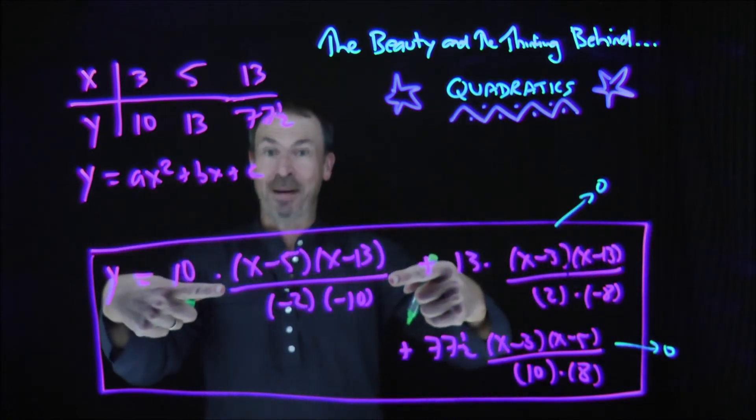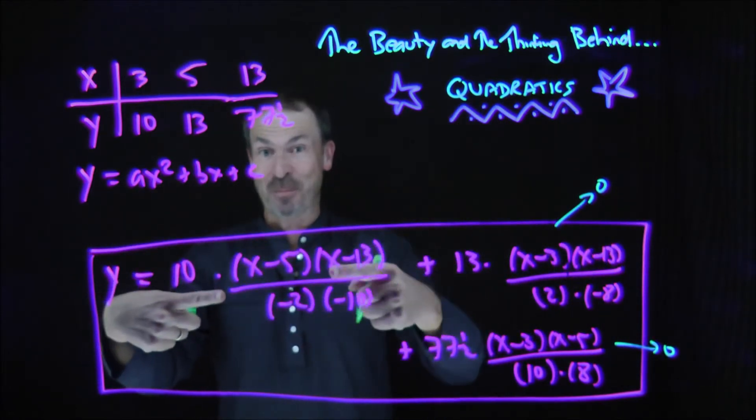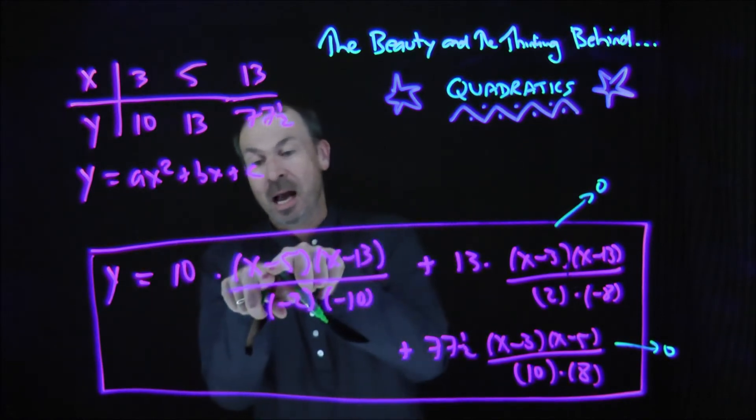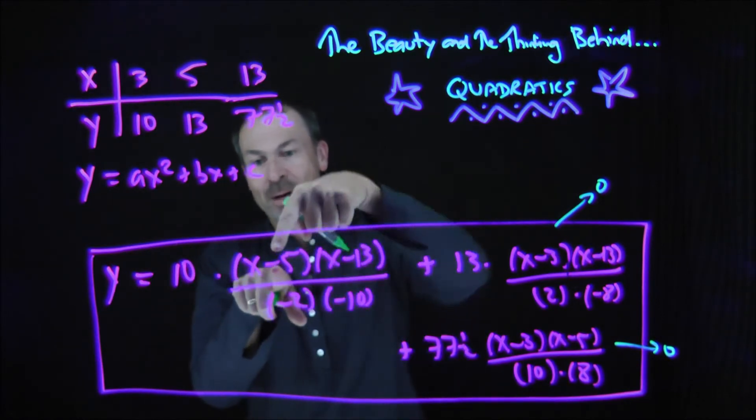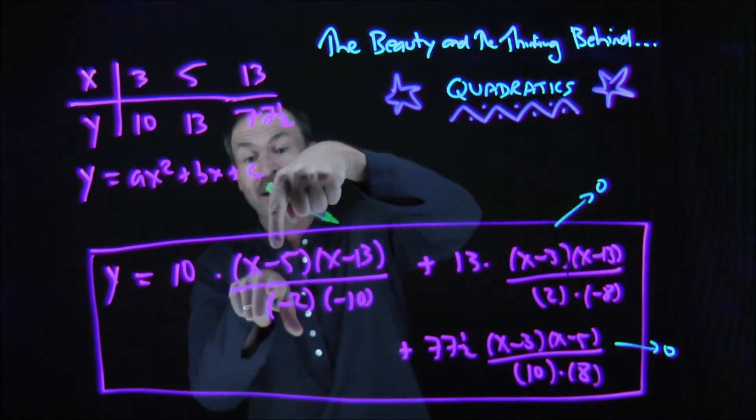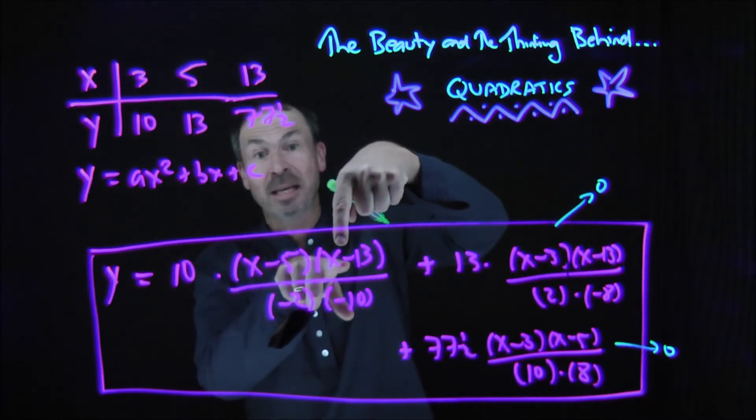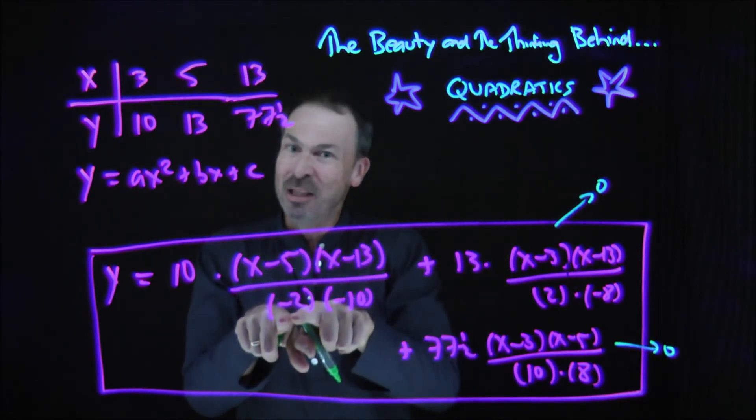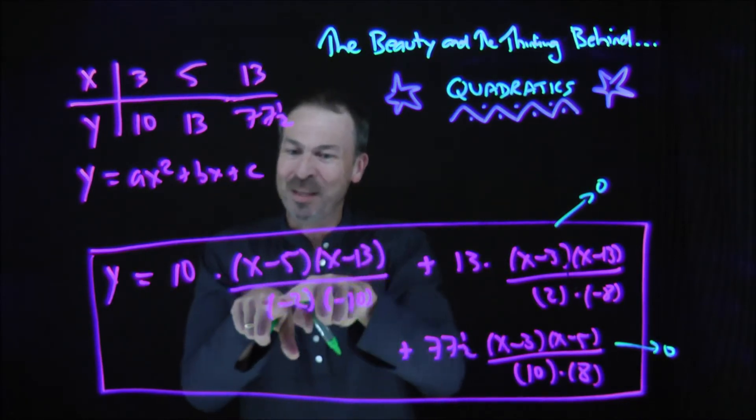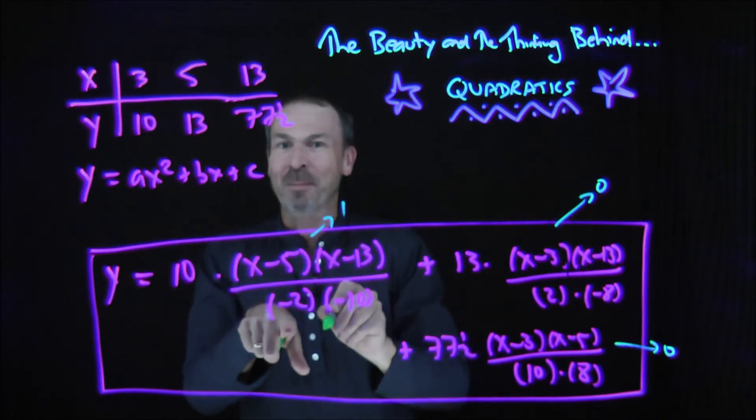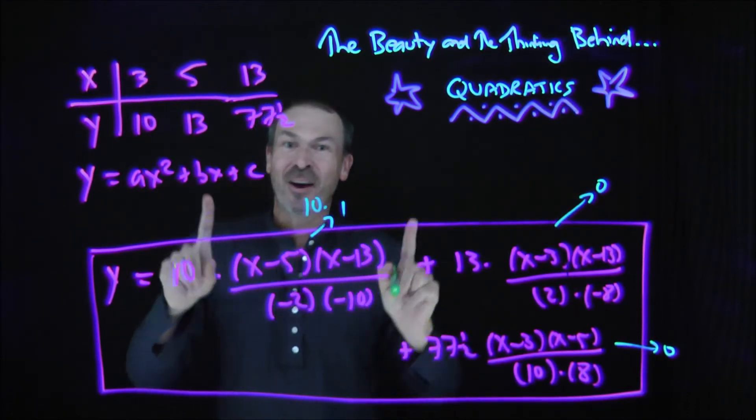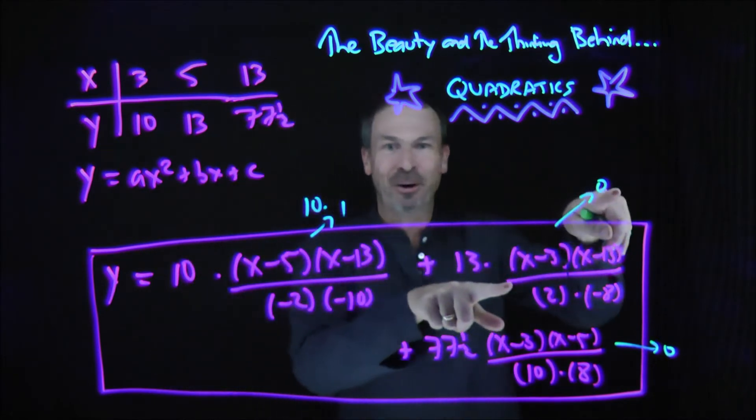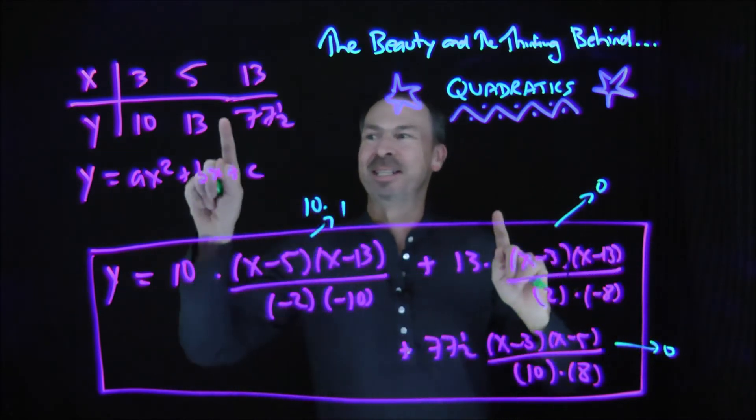So the only actions happening for x equals 3 is with this first term. And when I do put in x equals 3, look how I designed it. I've got something times something over something. When x is 3 on the top, I'll have 3 times 5. That is actually negative 2 times negative 10. So I have negative 2 times negative 10 on the top, which I've arranged to have negative 2 times negative 10 on the bottom. So all this can start just to be 1. In fact, it's 10 times 1. So if I put in x equals 3, I get 10 times 1 plus 0 plus 0, which is 10.